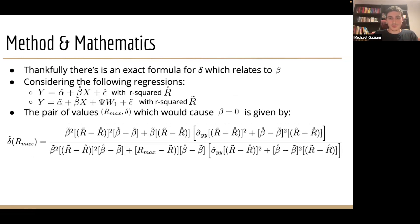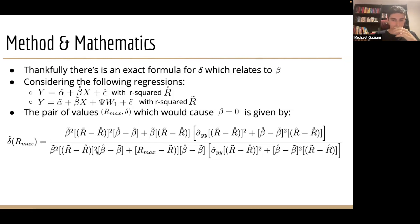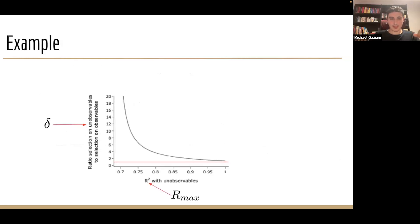Emily Oster comes up with a closed-form solution for delta. We consider two regressions: Y on our variable of interest alone, and Y on our variable of interest X plus the known observable variables. She comes up with a pair of values — R-max and delta — which would cause beta to equal zero. You run these two regressions, get the beta coefficients and r-squared values, and for a given list of R-max values you specify, that gives you some value of delta that would also make beta equal to zero.